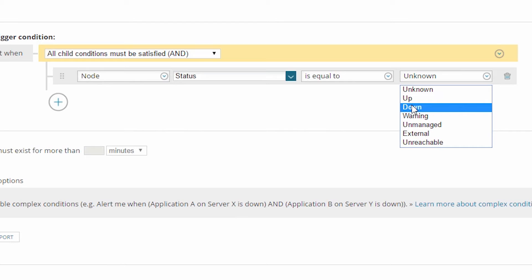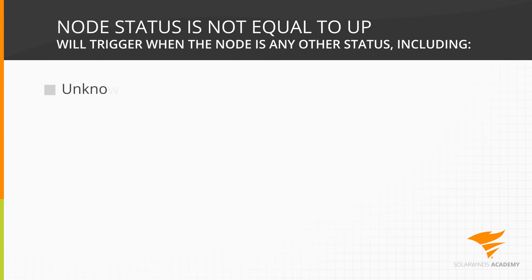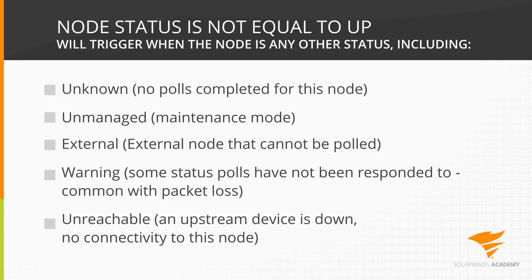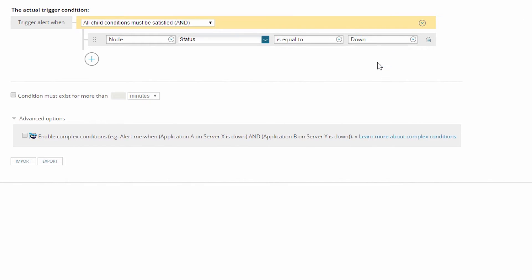Before I do, notice that there are several other status values listed in the database. When building your alerts, you need to account for those other possible variables. For example, rather than alerting when a node is down, it might be tempting to alert whenever the node status is anything other than 'up.' The problem is that would likely result in a lot of false positives, because you'd be alerting on statuses that don't necessarily make sense to include in a single alert. You need to be very specific — if you want to alert on multiple statuses, include a condition for each one. So now I have my first condition: alerting on any nodes with a status equal to 'down.'